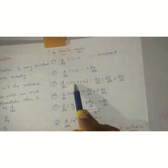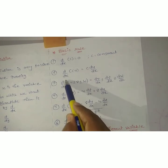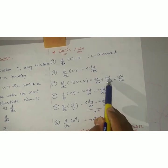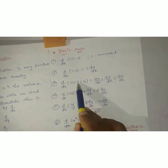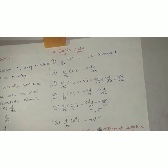Next rule: d by dx of (u ± v ± w). If you have terms like this, then we differentiate each term separately: du by dx, plus or minus dv by dx, plus or minus dw by dx. If there is a plus between terms, keep plus; if minus, keep minus. We differentiate all three terms one by one.